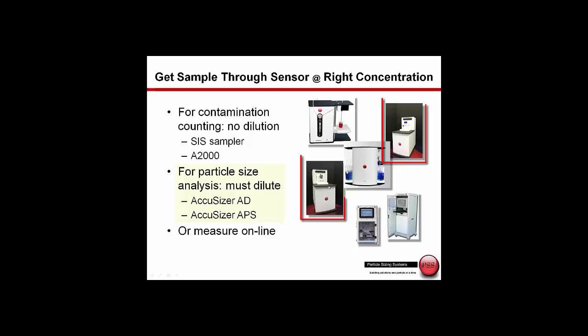The two systems here, the AccuSizer AD and the AccuSizer APS, have automatic dilution systems, either a single stage or a multiple stage. Here we can take very highly concentrated samples, automatically dilute it into that optimum concentration range for the sensor, and perform the particle size analysis and get the particle count still accurately in particles per ml. This can be done in the laboratory, or in the lower right, we show the online versions of the AccuSizer that can work with any of these sensors and can be used in the process environment.